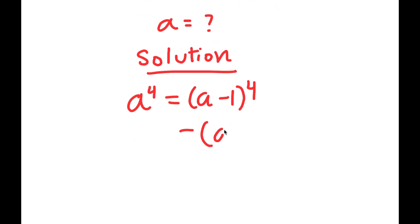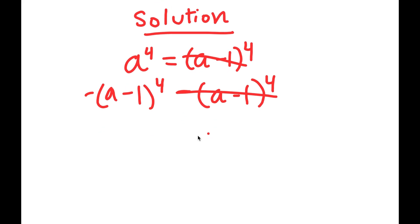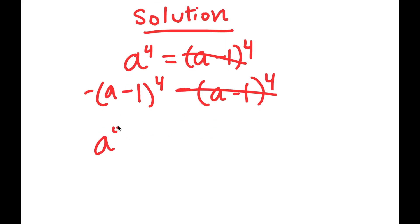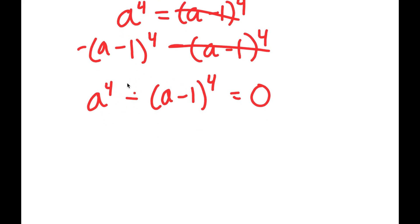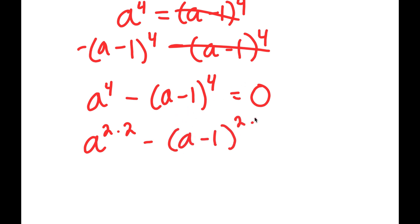From here, I'm going to subtract a minus 1 to the power of 4 on both sides. So these two cancel out and I get a to the power of 4 minus a minus 1 to the power of 4 is equal to 0. From here, I'm going to rewrite a to the power of 4 as a to the power of 2 times 2, and a minus 1 to the power of 4 as a minus 1 to the power of 2 times 2.